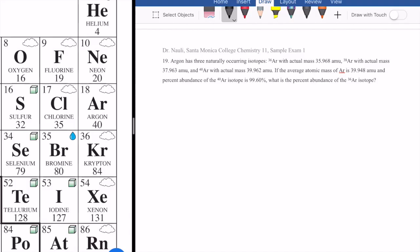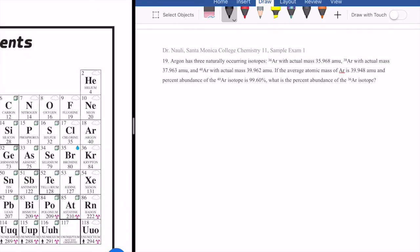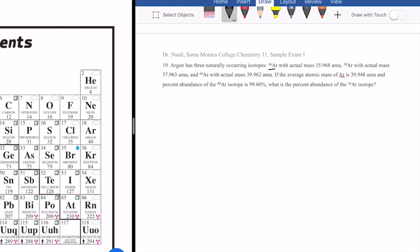Okay, now let's take a look at the last free response questions here in the CHEM 11 sample exam 1, or question number 19. So this one gives you argon, and it says that there's three isotopes of argon. Argon 36, 38, and 40.